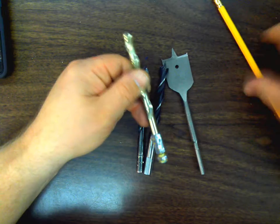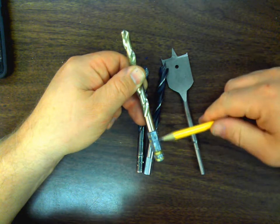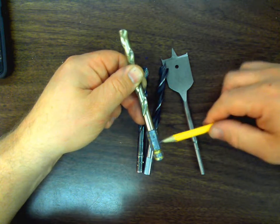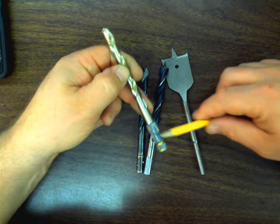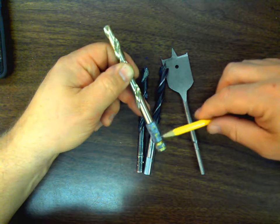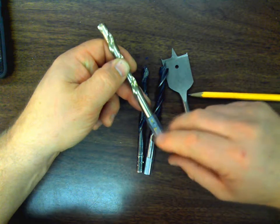Here's our brad point. Again, the brad point has the tip or the point, the flute, and the shank. So remember those three: the tip, the flute, and the shank.